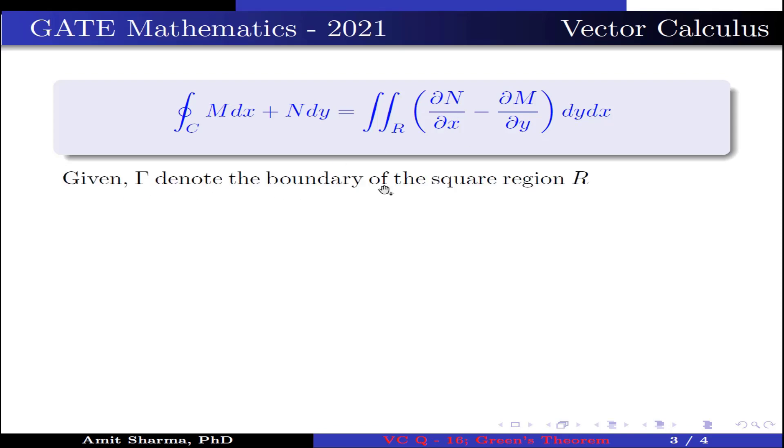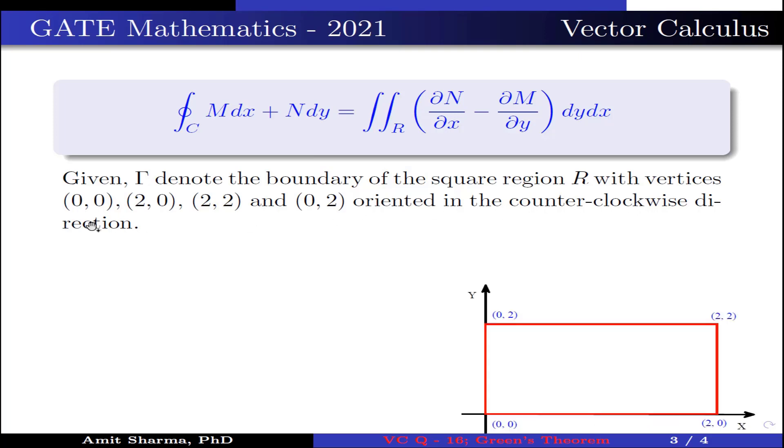Now given gamma denotes the boundary of square region R with vertices (0,0), (2,0), (2,2) and (0,2) oriented in counterclockwise direction, which is shown here in the figure.